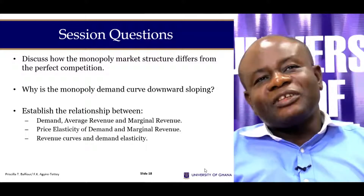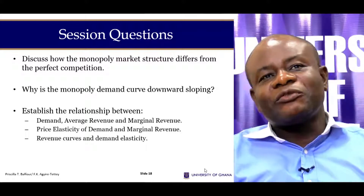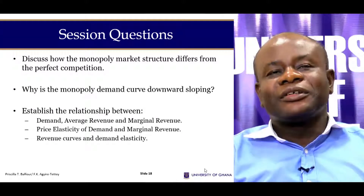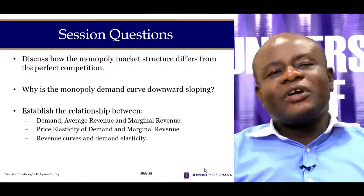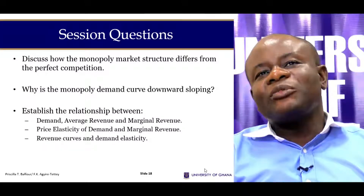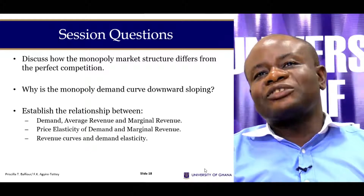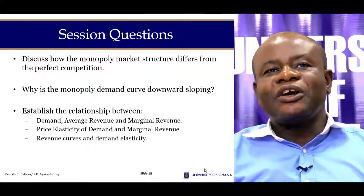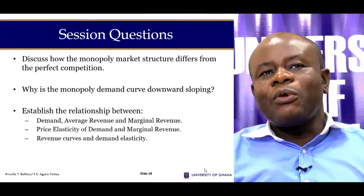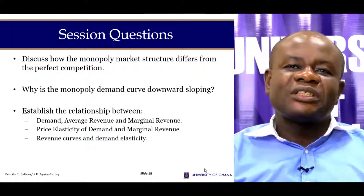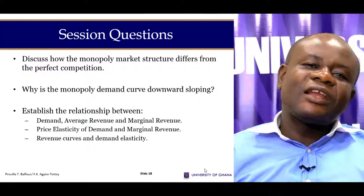At the end of this session, there are questions you should attempt: discuss how the monopoly market structure differs from the perfectly competitive market structure, and explain why the monopolist's demand curve is downward sloping. Thank you, and I'll see you in the next session.